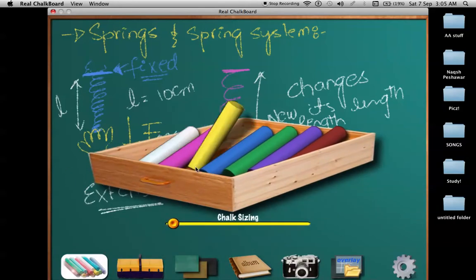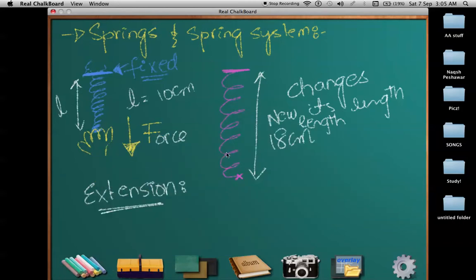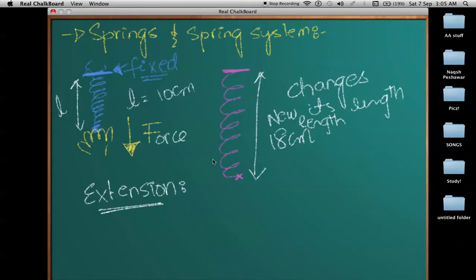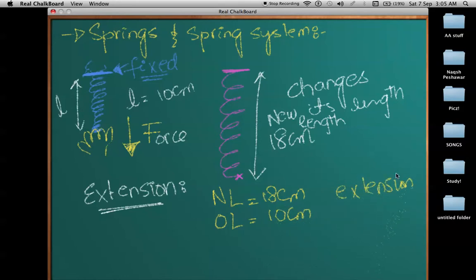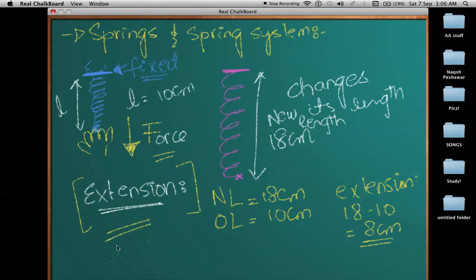Extension is the change in length — the difference between the new length and the old length. In this case, the new length is 18 centimeters and the old length is 10 centimeters, so the extension is 18 minus 10, which is 8 centimeters. The spring has extended by 8 centimeters when we applied the force. Remember: extension equals new length minus original length.